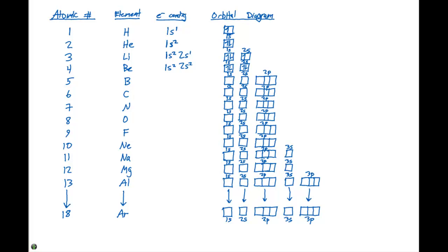For boron, we need to fit five electrons in there. We will fill up the 1s2 and the 2s2 orbitals, and in addition we have to put an electron in the 2p orbital, giving us five electrons total in this orbital diagram.